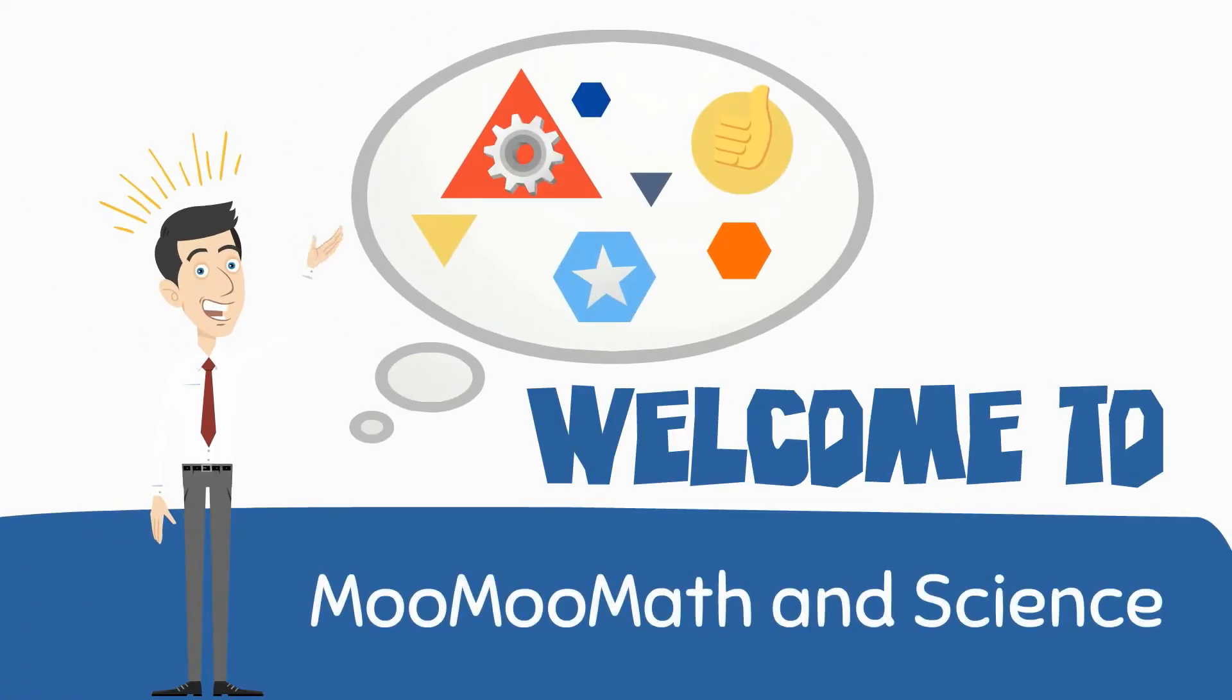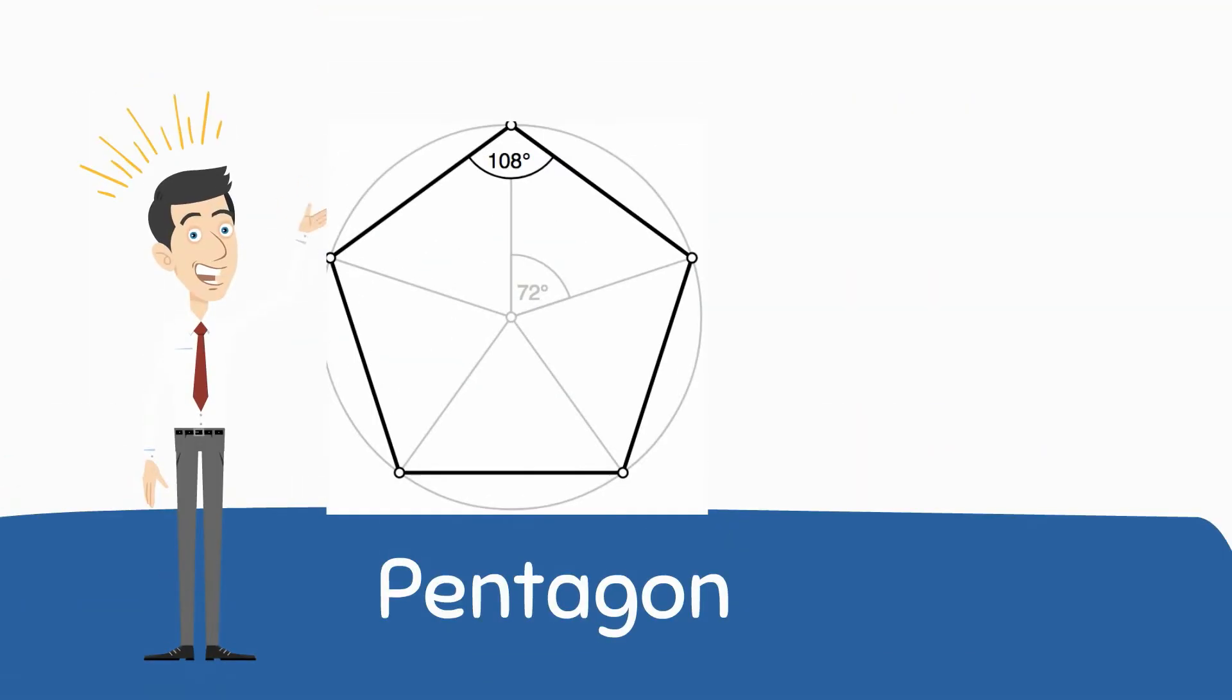Welcome to MooMath and Science. In this video I would like to talk about a pentagon shape. A pentagon is a 5-sided polygon.